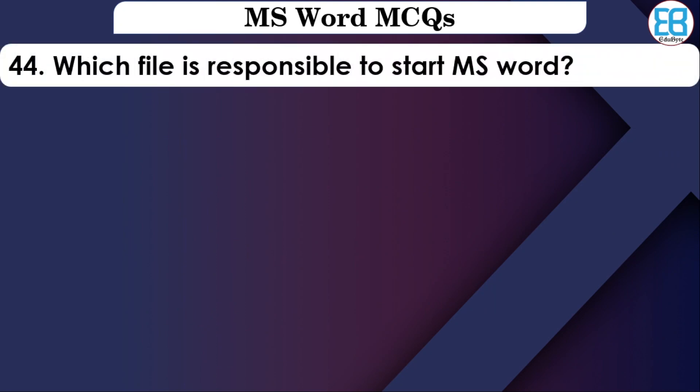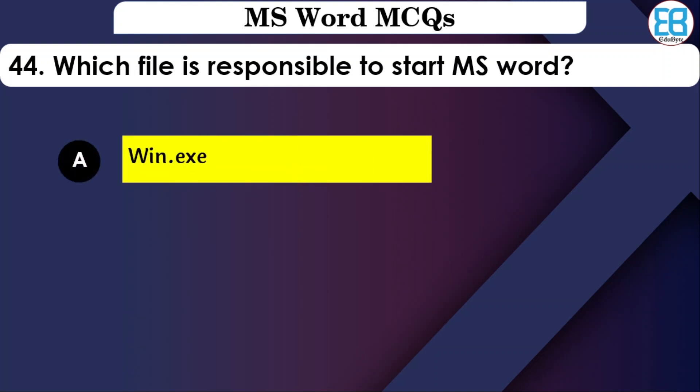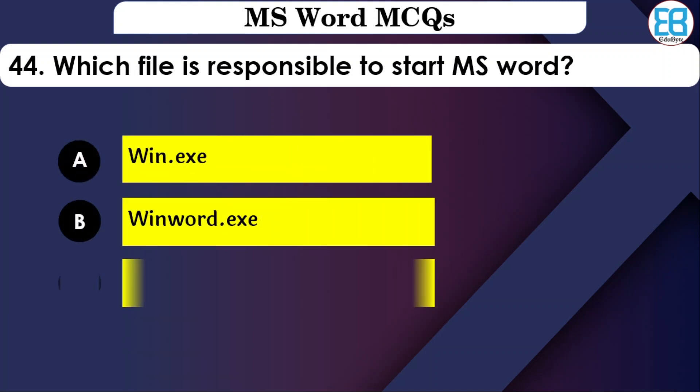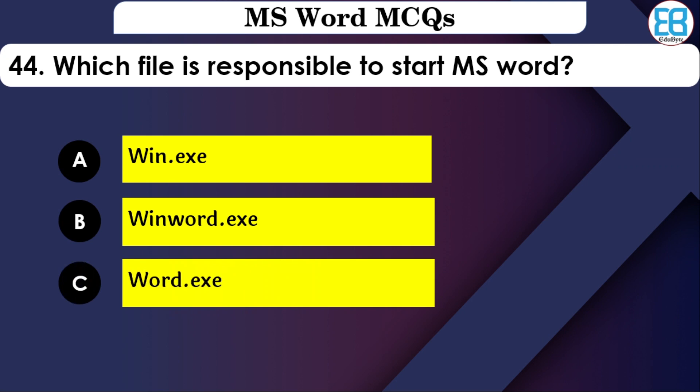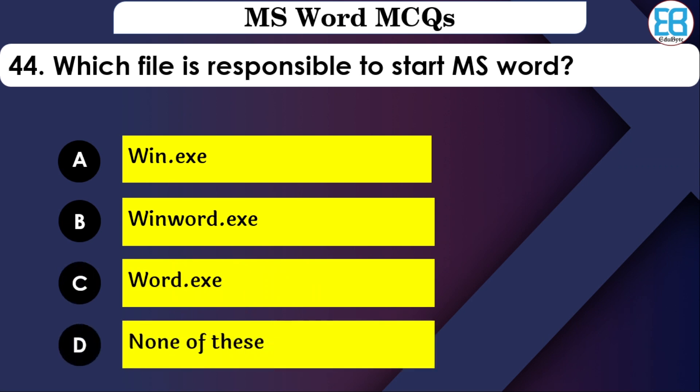Which file is responsible for starting MS Word? The options are: Win.exe, WinWord.exe, or Word.ext. The correct option is WinWord.exe — this is the executable file that starts MS Word.